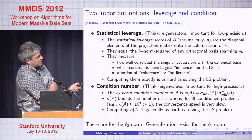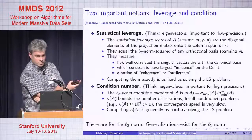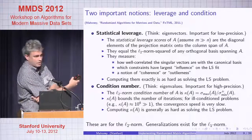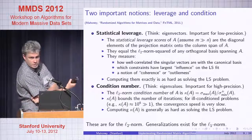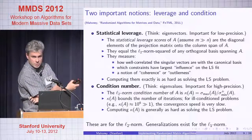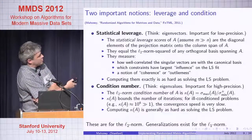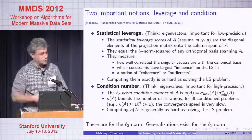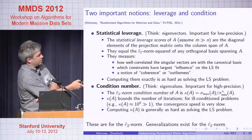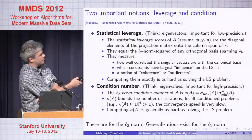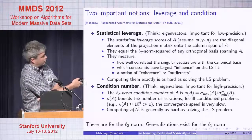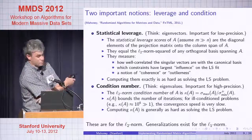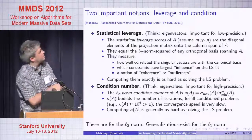The condition number — think eigenvalues — relates to the aspect ratio of the quadratic well. It's the maximum singular value over the minimum singular value, and it's related to the number of iterations you need. Computing it is generally as hard as solving the problem. These are two good ways to think about what's going on, but they don't immediately lead to a good implementation.